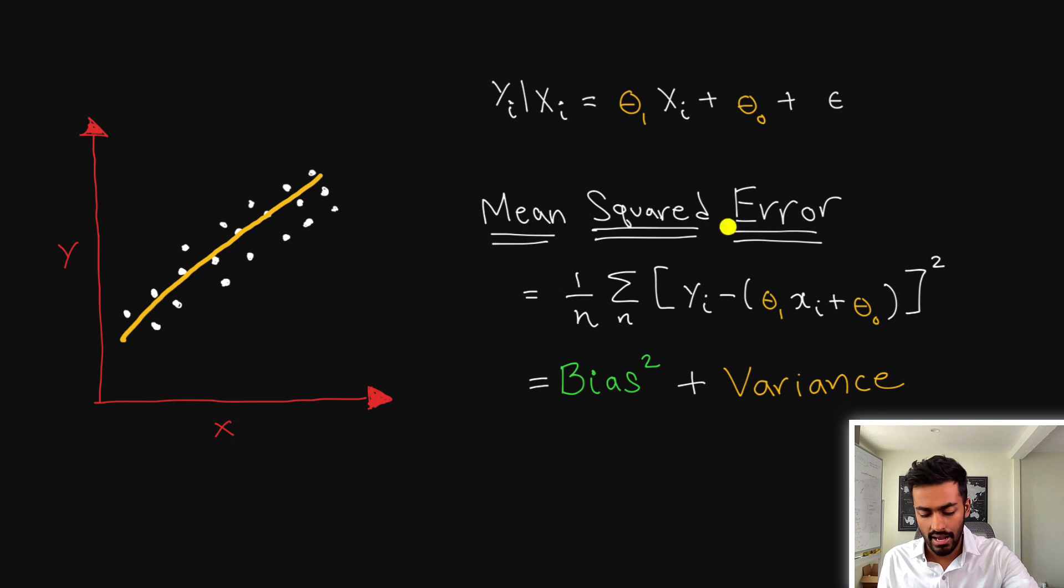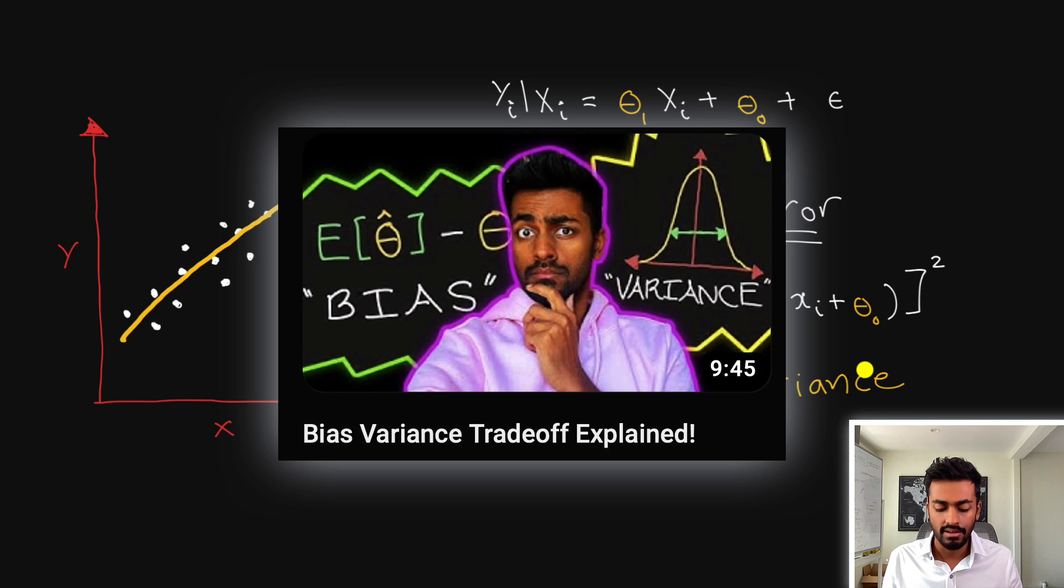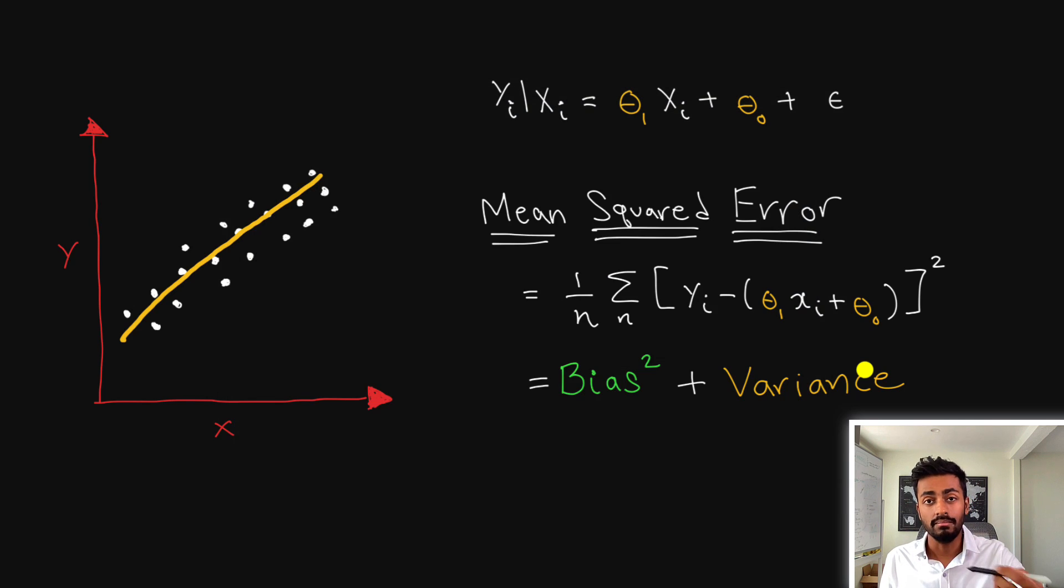Now why mean squared error is actually so good is because it can be decomposed into a bias term as well as a variance term. Now I've explained a lot about bias and variance in another video but essentially good machine learning models have both a low bias for the estimate of thetas and also a low variance for the estimations of thetas.